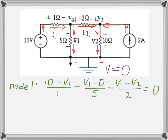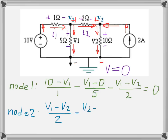Now the nodal equation for node 2. There are three currents, so three components. Current I2 is now coming into node V2, so it's positive: +(V1 − V2)/2. The current through the 10 Ohm resistor leaves the node, so it's negative: −(V2 − 0)/10. The 2 Amp current source is coming into node V2, so it's positive: +2. That is the second nodal equation, and together they form the complete nodal system.